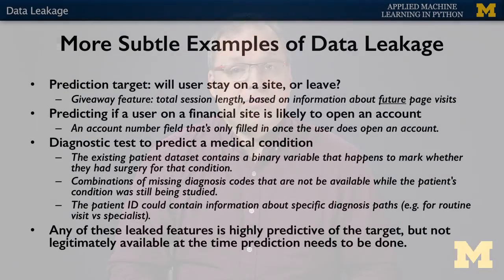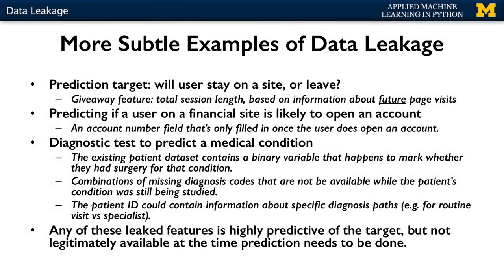A second example of leakage might involve trying to predict if a customer on a bank's website was likely to open an account. If the user's record contains an account number field, it might normally be empty for users still exploring the site, but eventually is filled in once the user opens an account. Clearly, the user account field is not a legitimate feature in this case, because it may not be available at the time the user is still exploring the site.